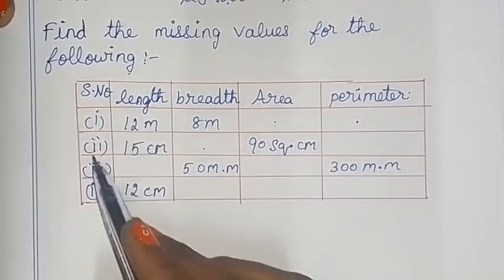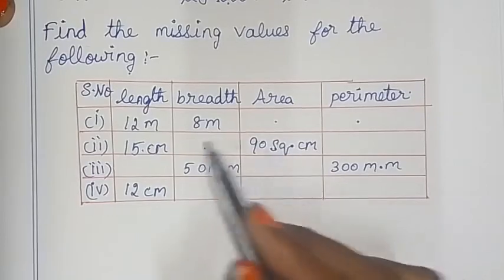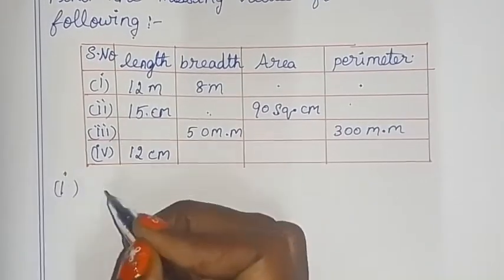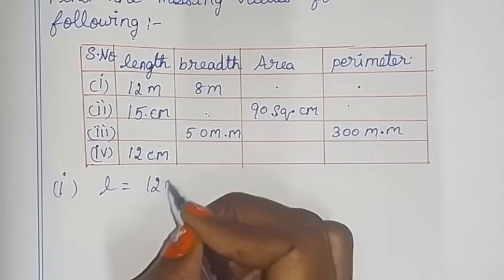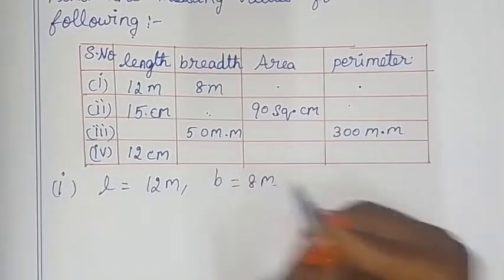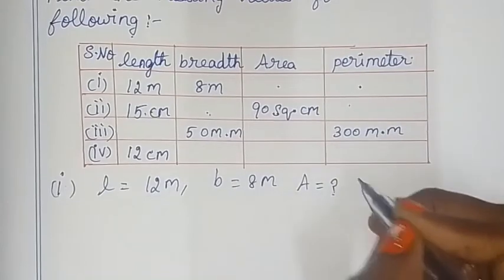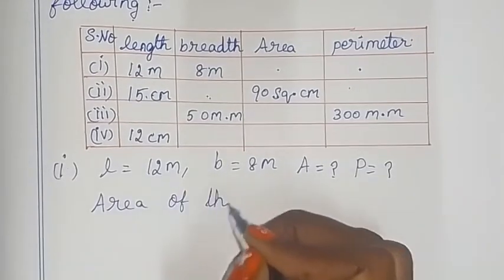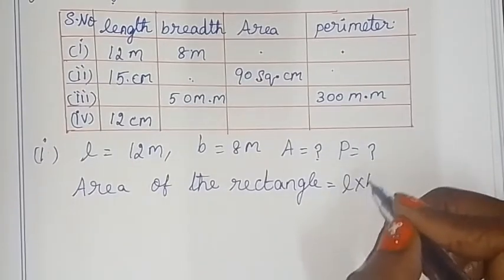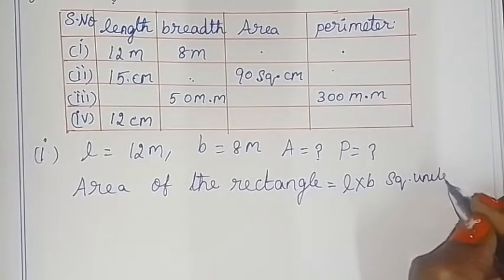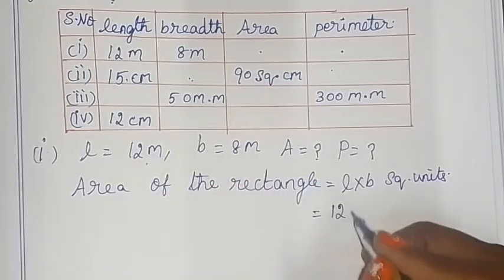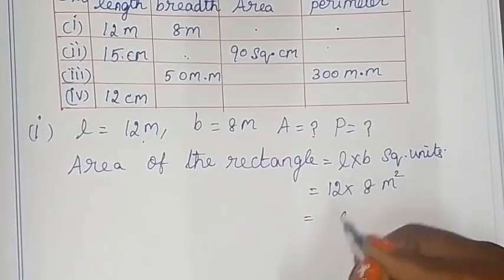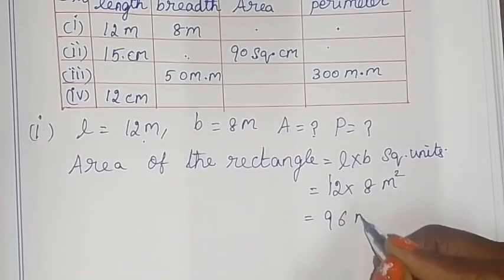In the first rectangle, length is 12m and breadth is 8m. We need to find area and perimeter. Area of the rectangle is equal to length into breadth square units. That is equal to 12 × 8 = 96 m².